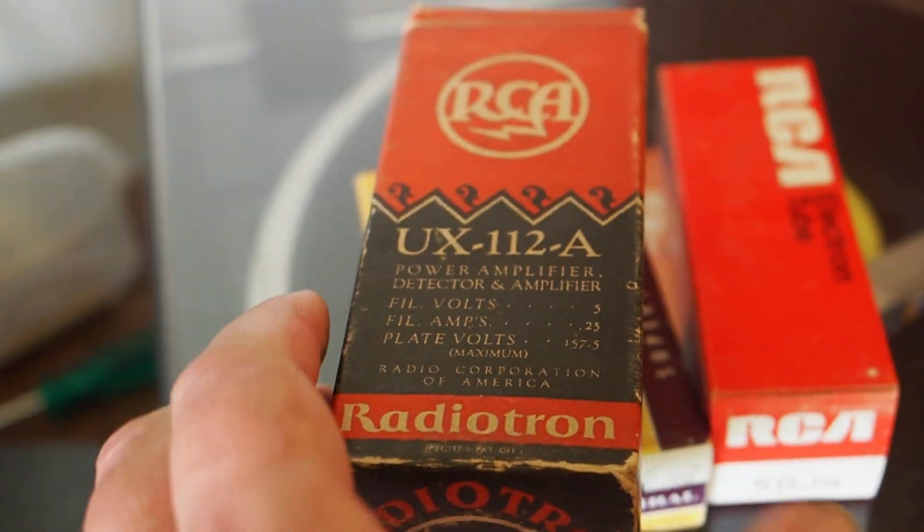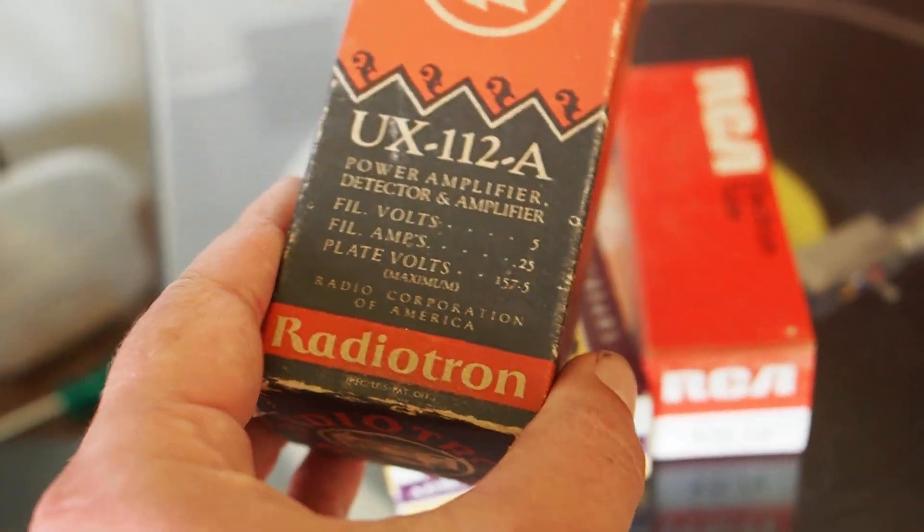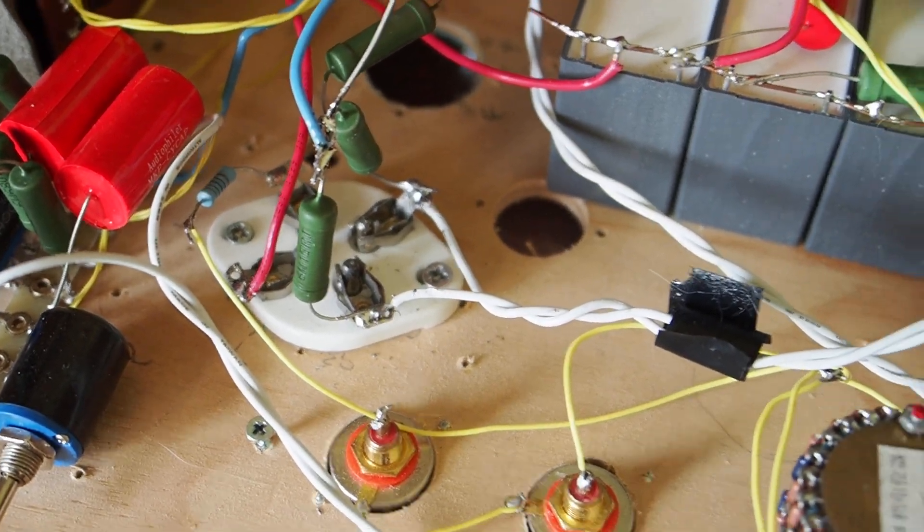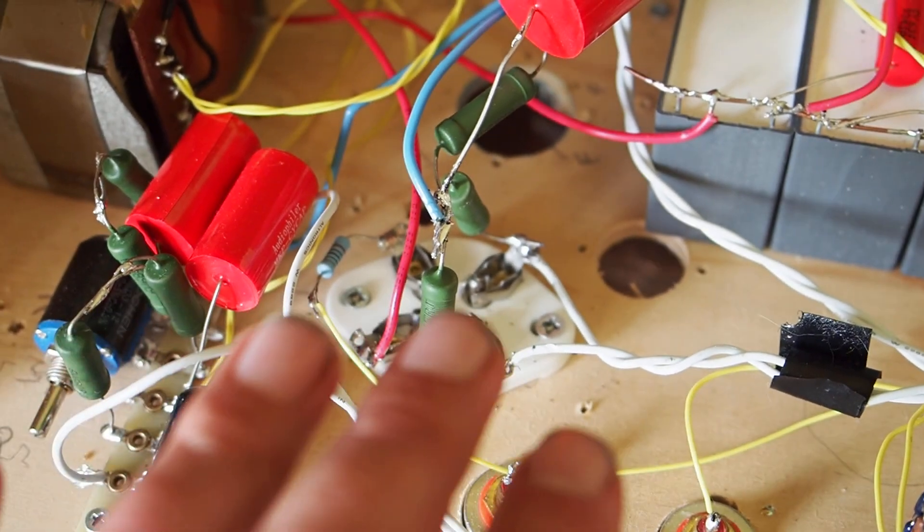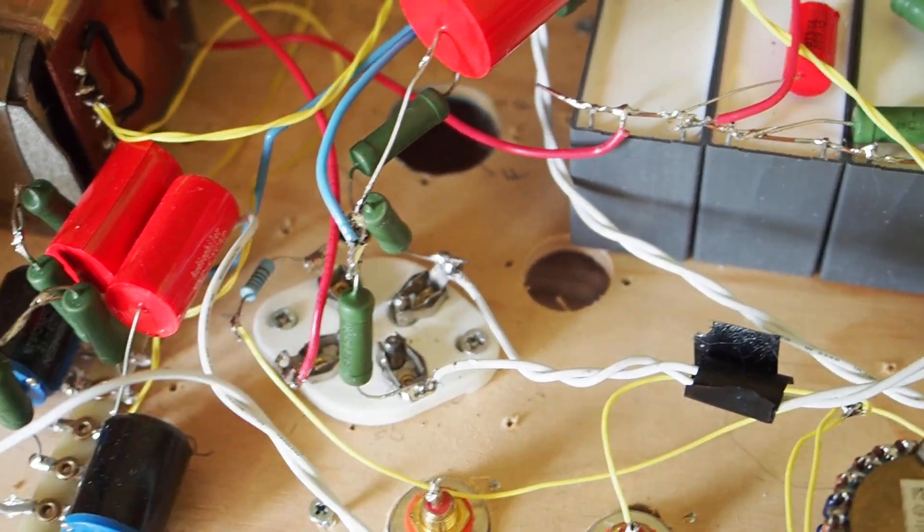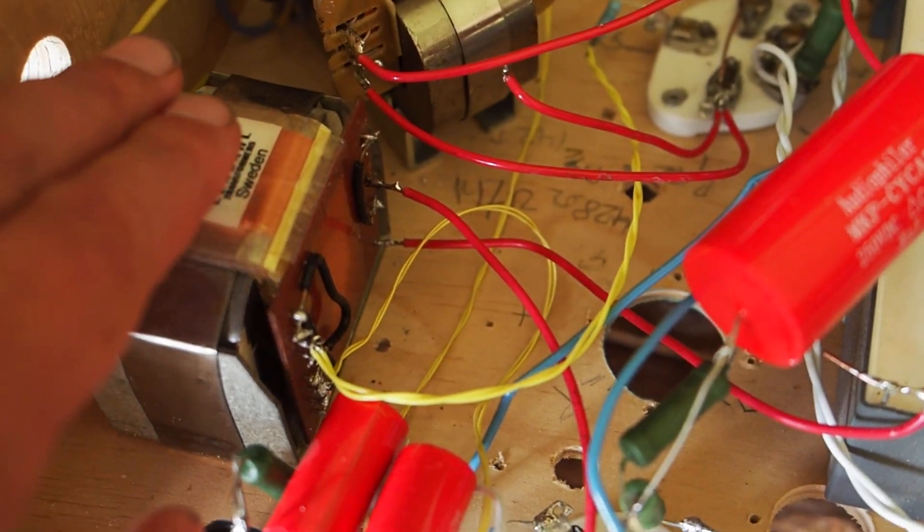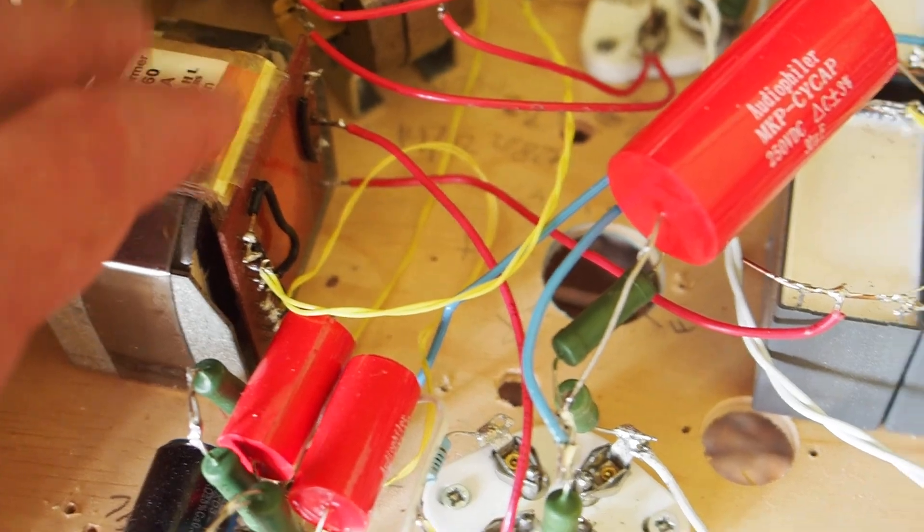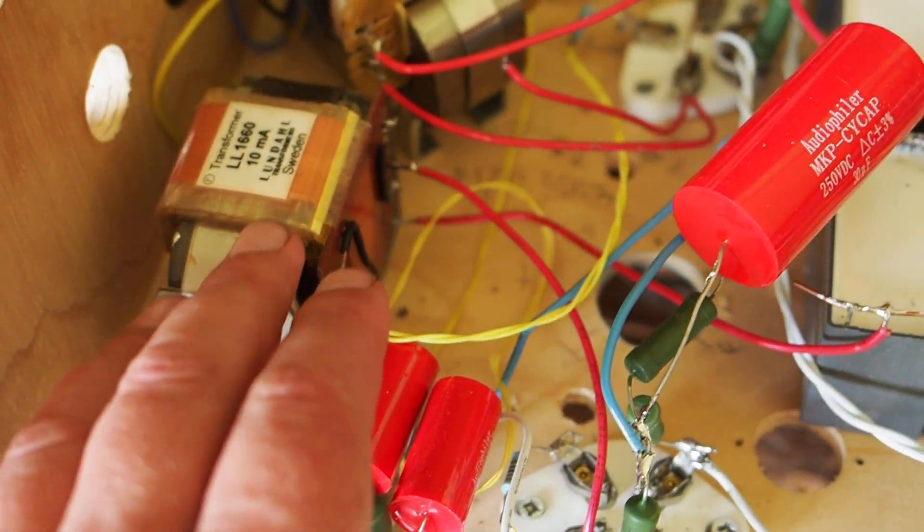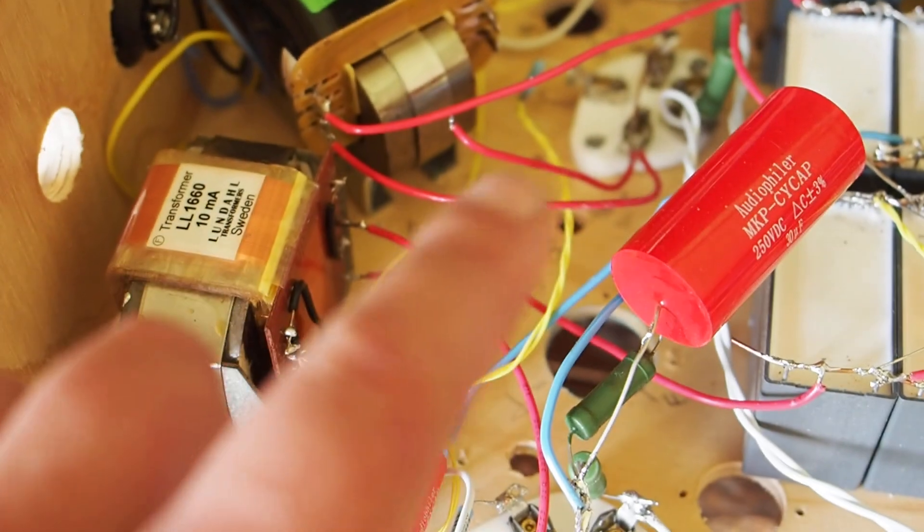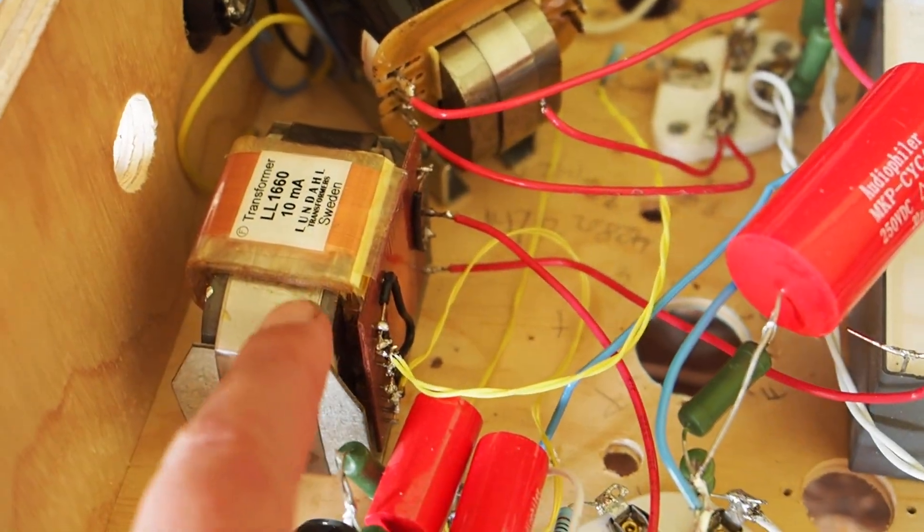That got me thinking, because one of the changes, not just the tube type, is that this tube has a slightly lower plate resistance. The plate resistance of this one is probably 4,700 ohms, maybe 5,000 ohms the way I use it, and the Type 26 is 7,300 ohms. So it's slightly lower.